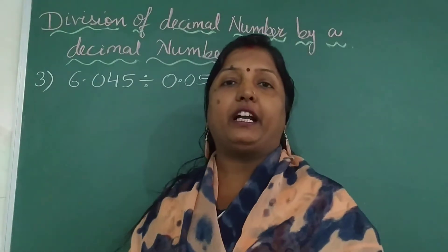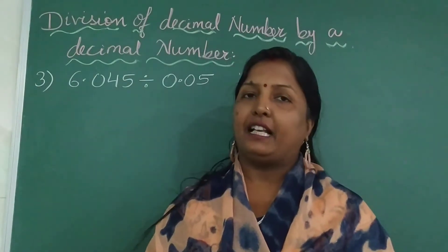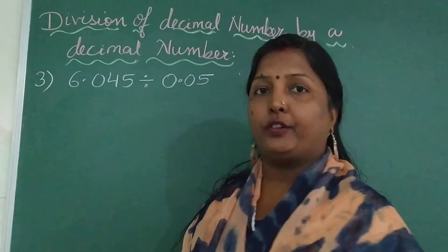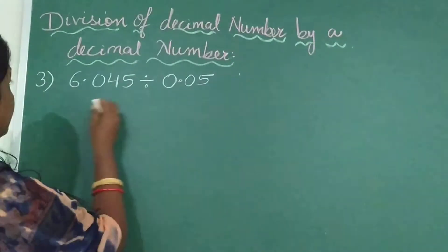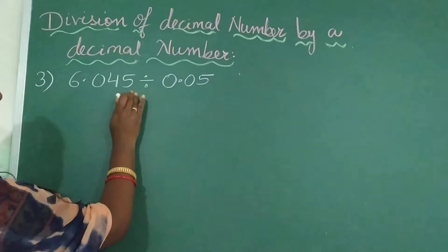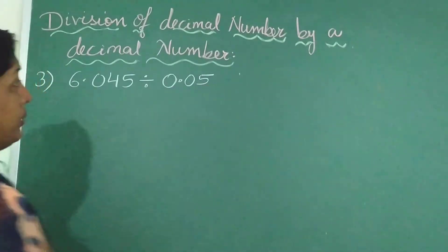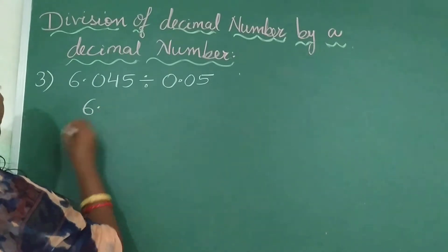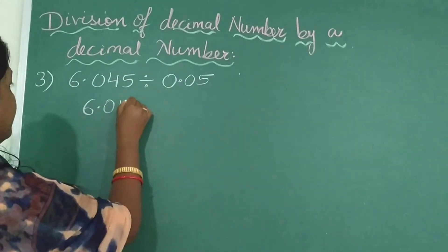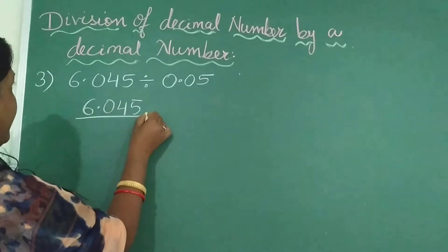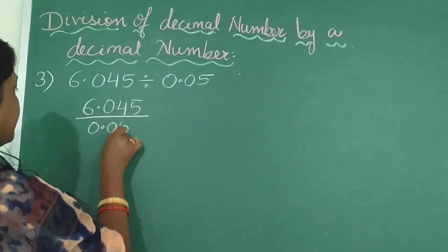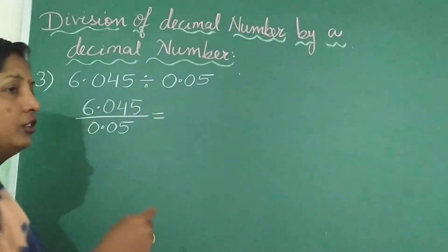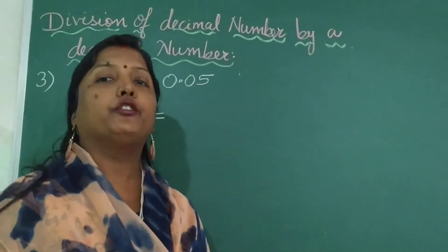So we learnt how to divide a decimal number with a natural number. Now let us learn how to divide a decimal number with a decimal number. So for that, what we are doing is: we have a decimal number divided by a decimal number here also. You can convert both of them into fractions.